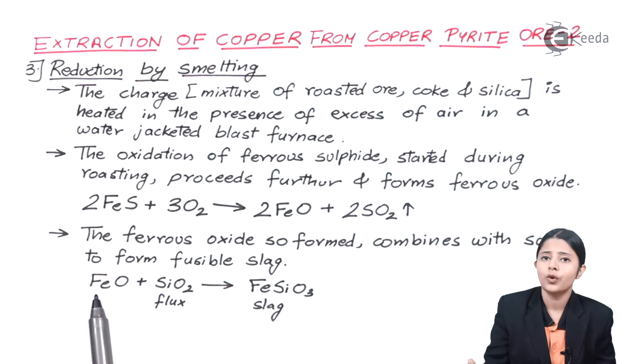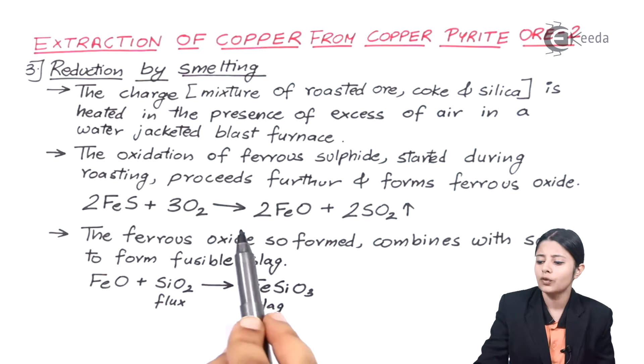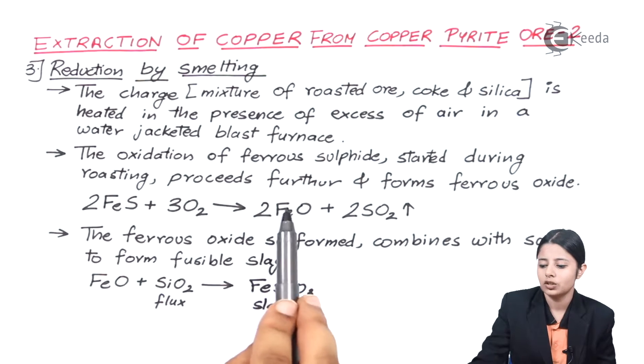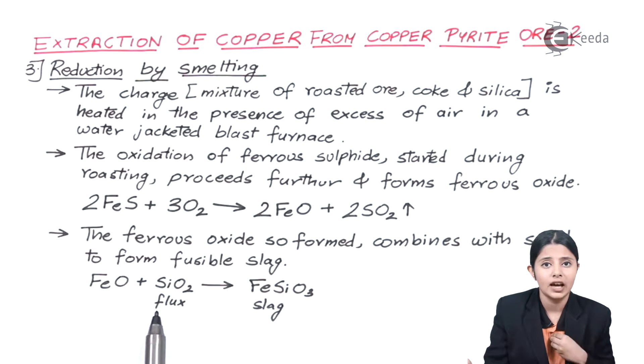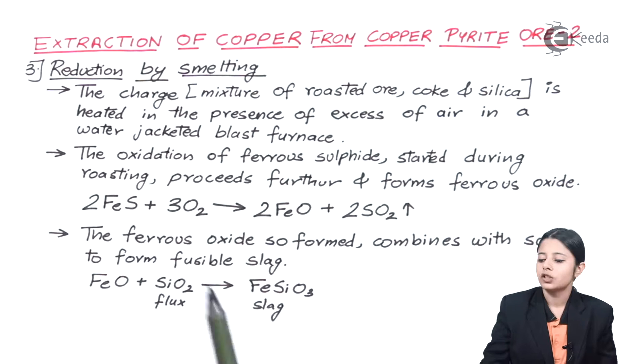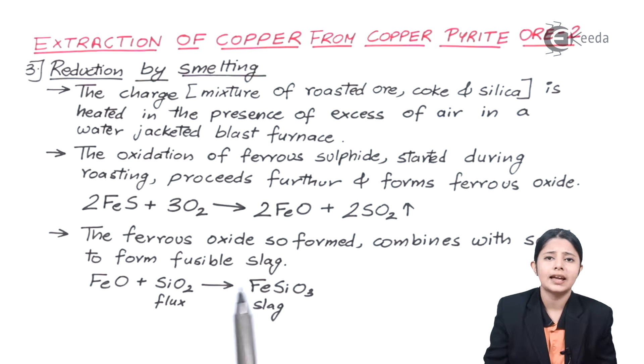So now let us see how is this formation of slag possible. We have FeO. Now from where did we get FeO? FeO we got from the product of the previous reaction. FeO plus SiO2. SiO2 is the flux that we have added. Now why do we add flux? We add flux deliberately. So this flux goes and mixes with all the impurities and forms slag. So FeSiO3 is the exact slag which is going to be formed.